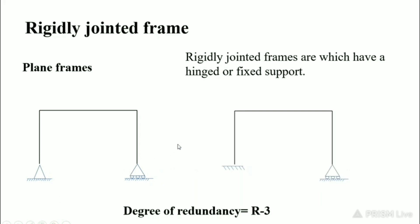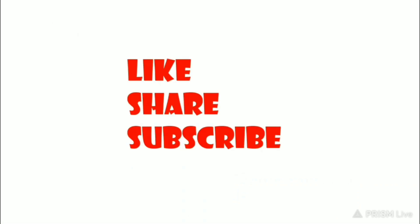The second frame has a fixed support and a roller support. The criteria is that a rigidly jointed frame must have at least a hinged or fixed support. The degree of redundancy for rigidly jointed frames is also r minus 3, same as for beams.